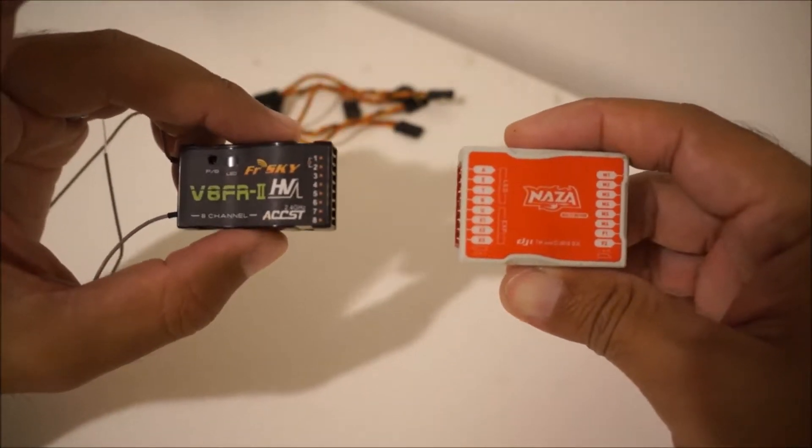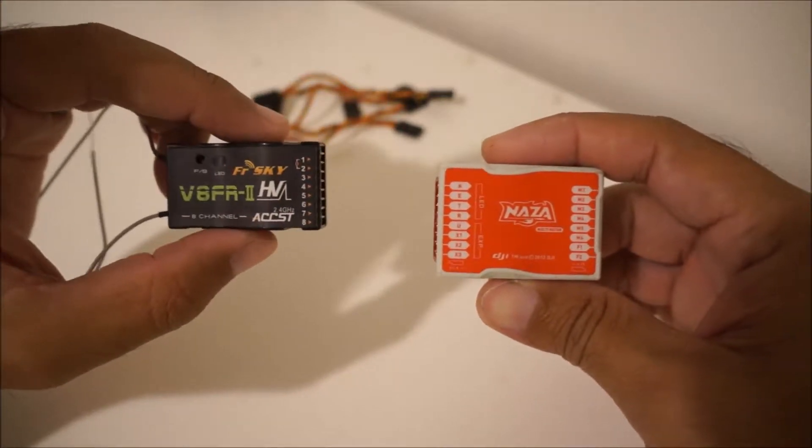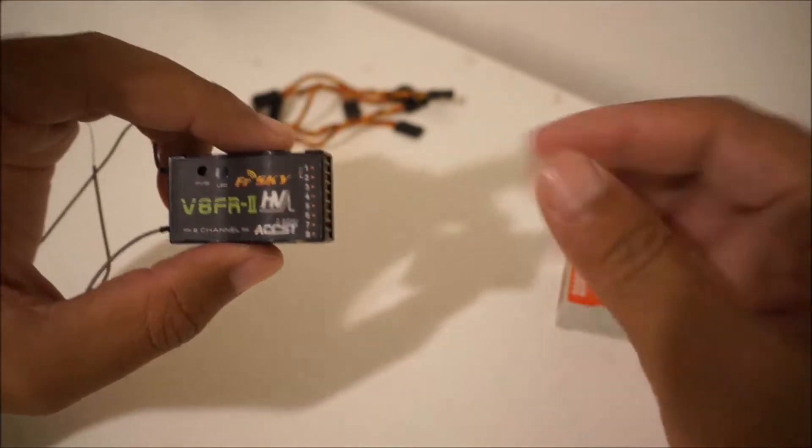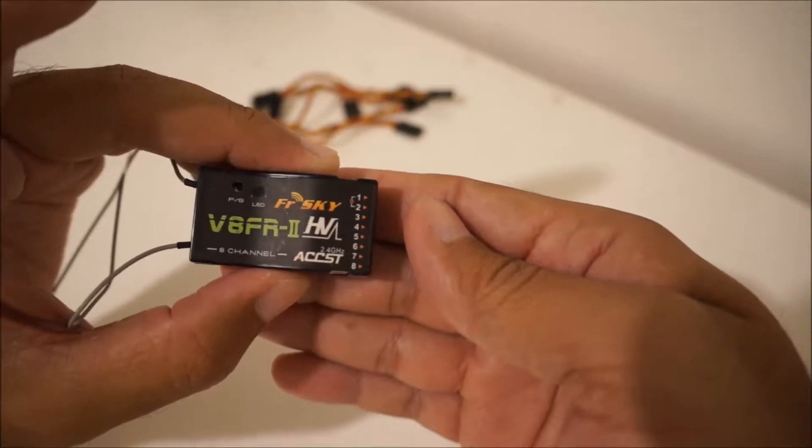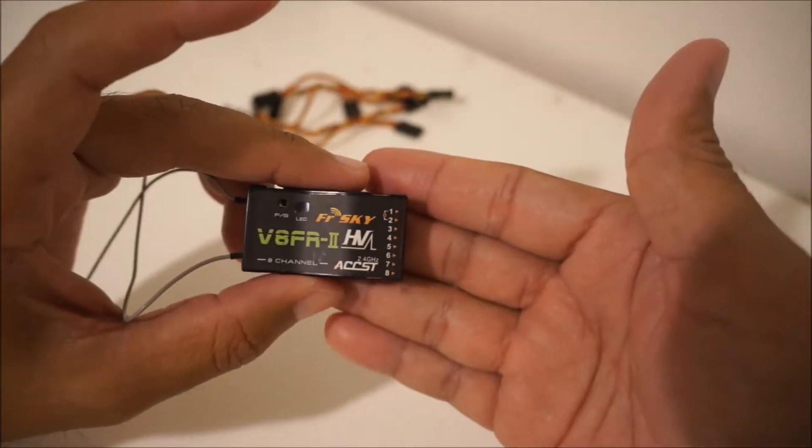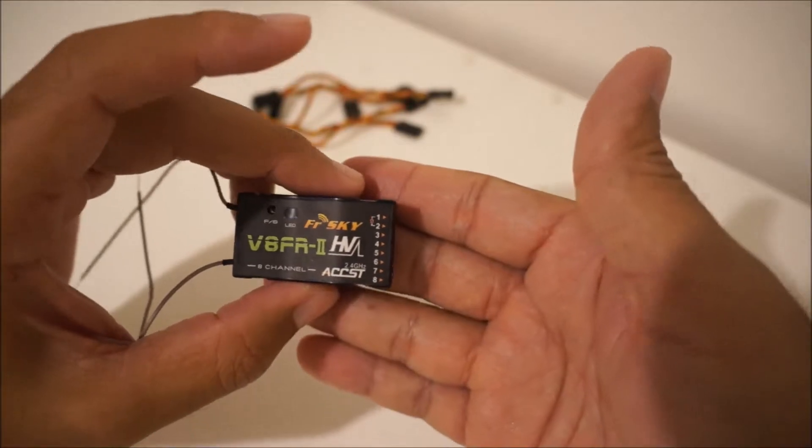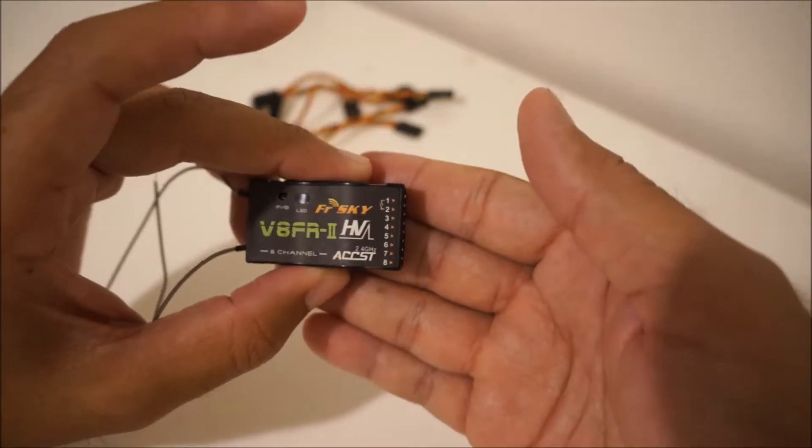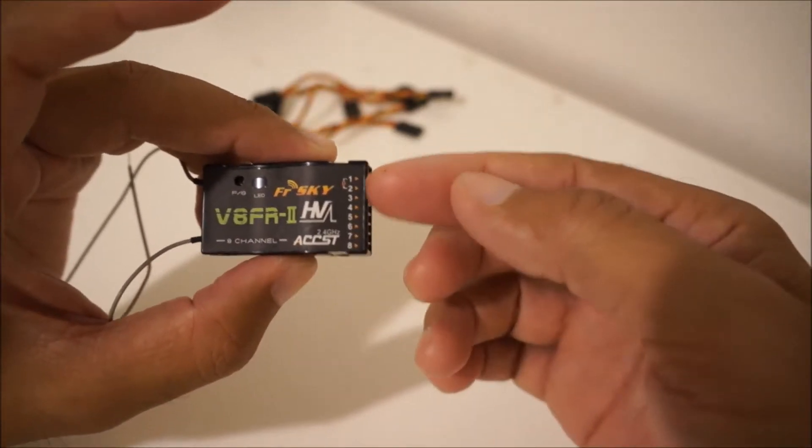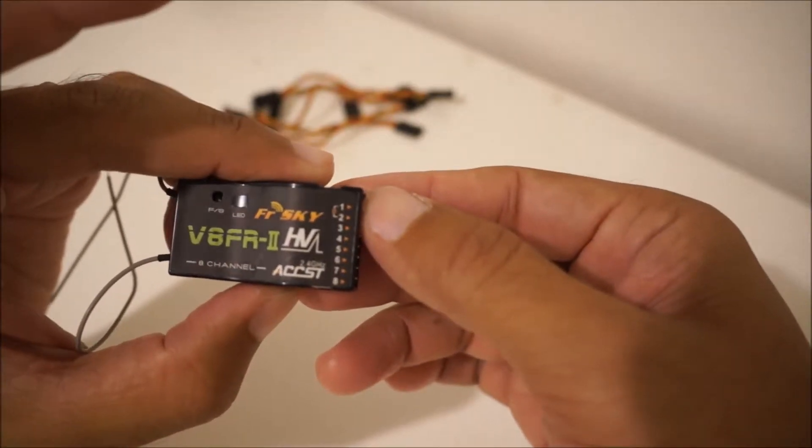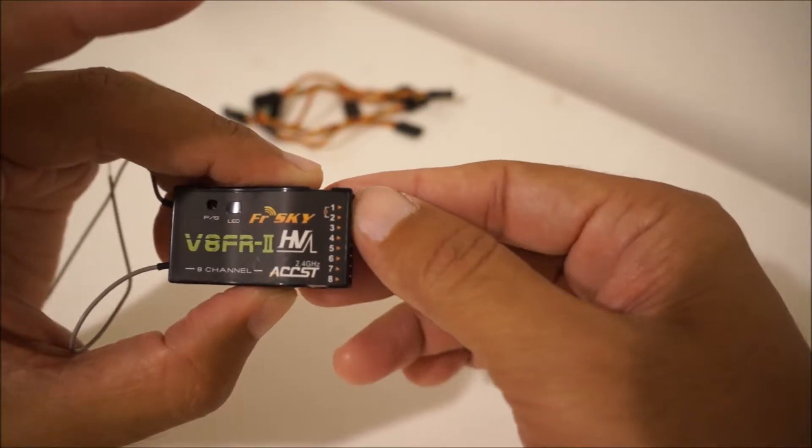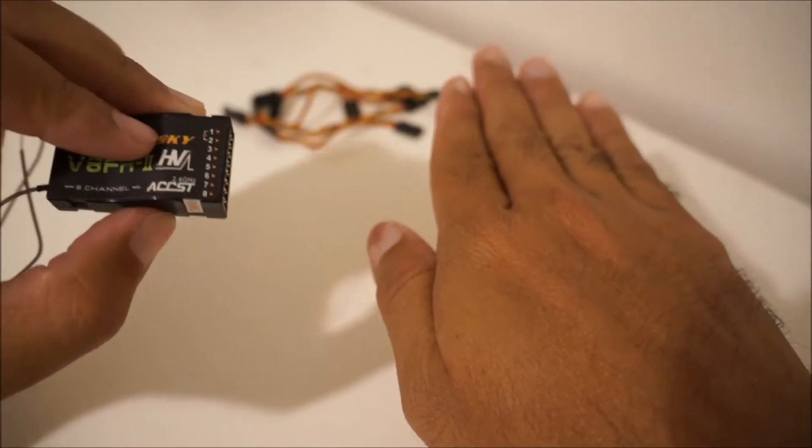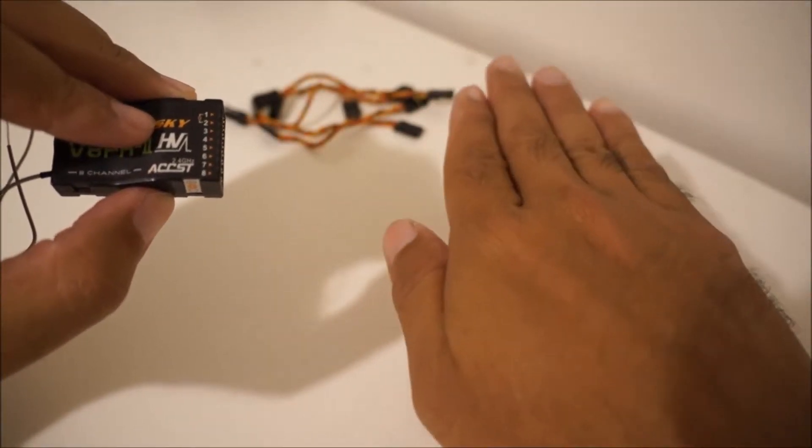First off, on my radio I'm using the FrSky or Eternity or FlySky, other generic stuff out there. Your radio might be a little bit different as far as the way the channels are set up. My number one channel is the aileron.